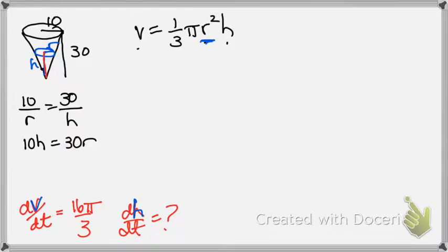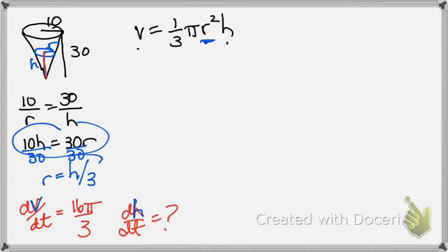So to get rid of that r, I'm going to come over here and solve for r. Divide by 30 on both sides, and r is going to equal h/3. Now take what r equals and plug that in up here.